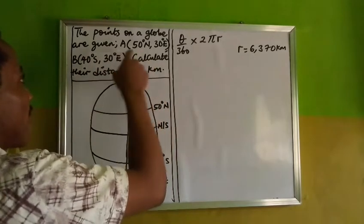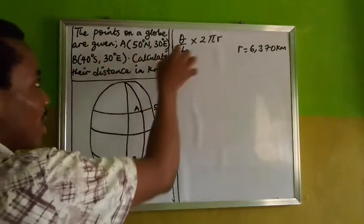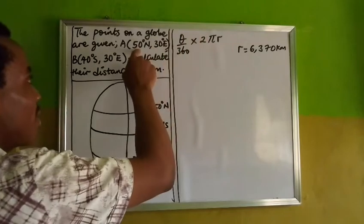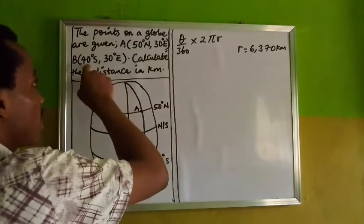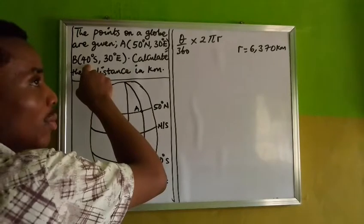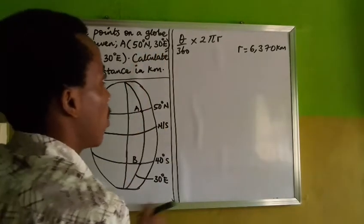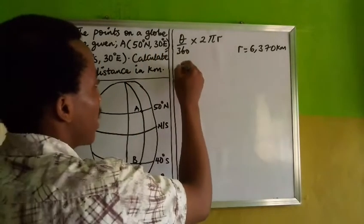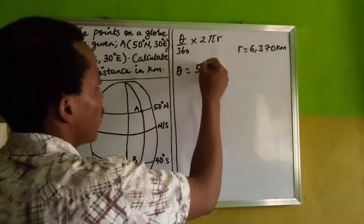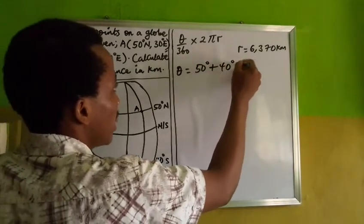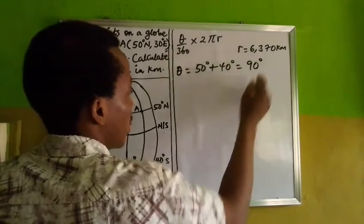So my latitudes are different, meaning I add: 50 degrees plus 40 degrees to get theta. If I had been dealing with 50 degrees north and 40 degrees north, I would subtract. But here, theta equals 50 degrees plus 40 degrees, which gives me 90 degrees.